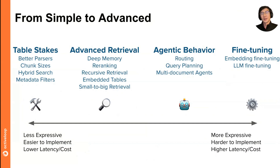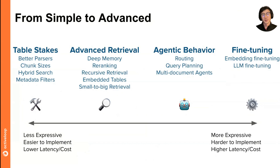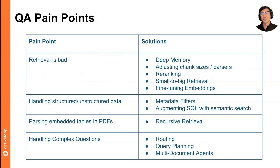On the right half, you have techniques that will fundamentally increase the capabilities of your RAG pipeline — they'll actually be able to do more things. But these typically involve higher upfront and marginal latency and cost, and are a bit harder to implement and tune. This includes adding agentic behavior to your RAG pipeline — making it an agent capable of query planning, answering questions across structured and unstructured data, routing, and fine-tuning the LLM and embeddings yourself for better performance.